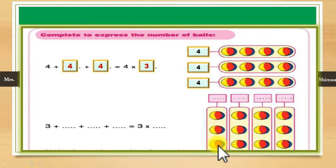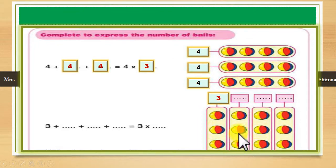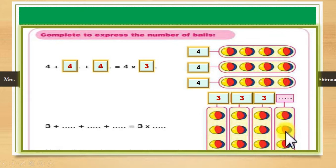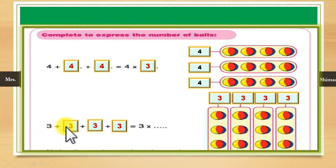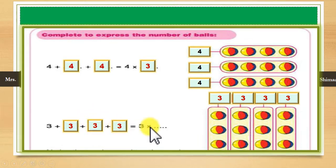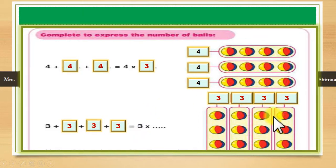How many balls can you see here? One, two, three. After that we have another three: one, two, three. One, two, three. One, two, three. So three plus three plus three plus three. Three is repeated one, two, three, four times. It means that it is four times three. When I use the multiplication sign — times — I write the number being repeated, which is 3, times the number of repetitions, which is 4.